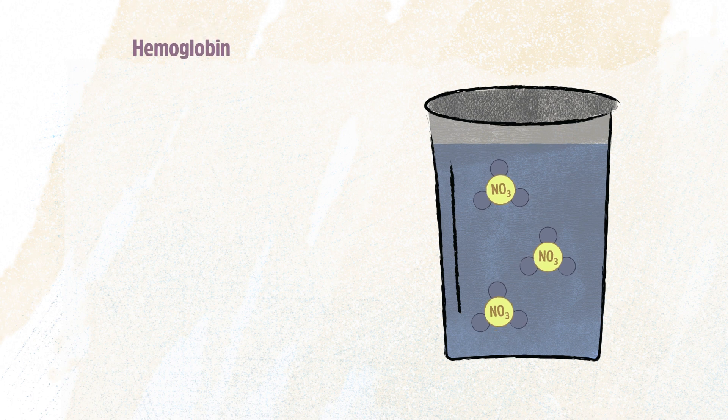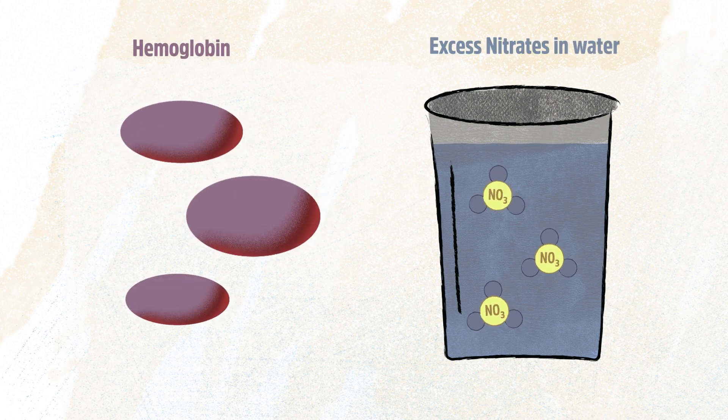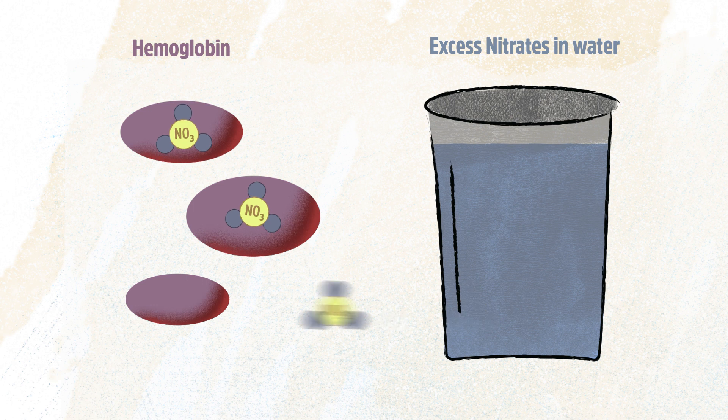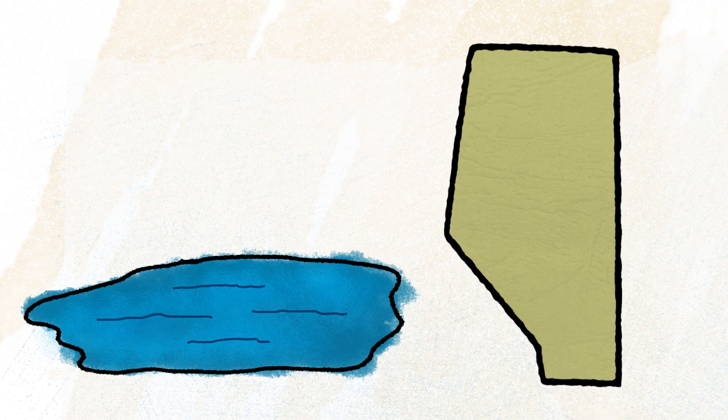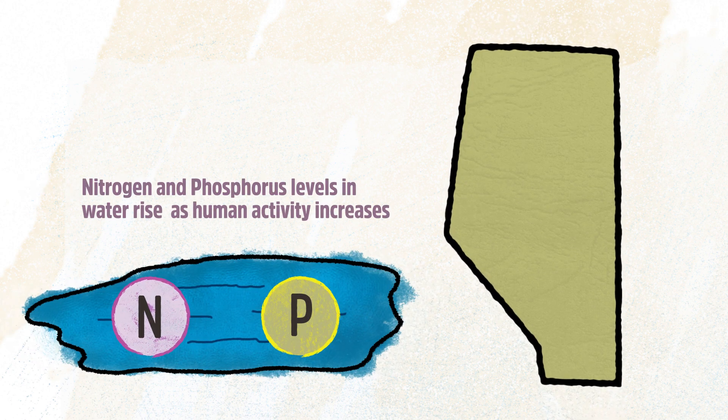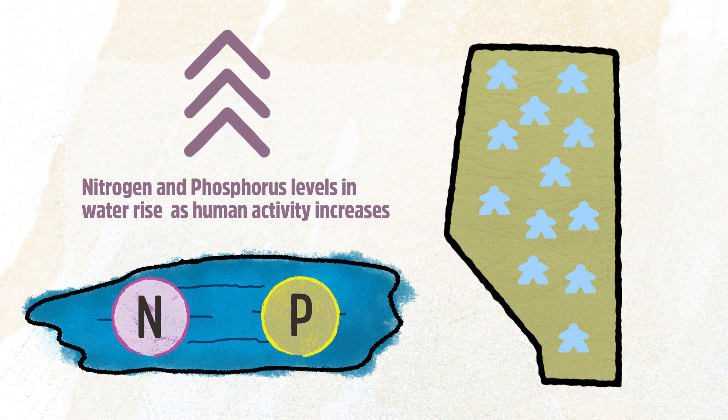Excess nitrate in drinking water is also dangerous to animals, as the nitrates can attach to hemoglobin, reducing the oxygen-carrying capacity of this molecule in the blood. The amount of nitrogen and phosphorus in Alberta's water has increased as human activities have increased.